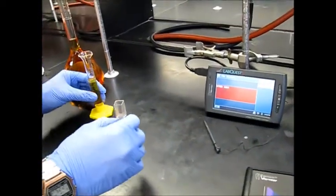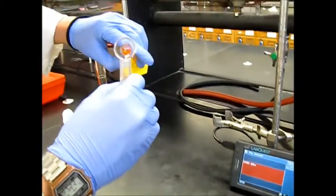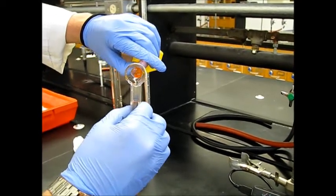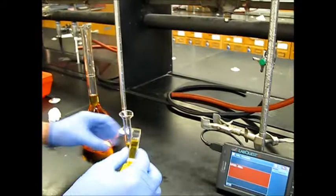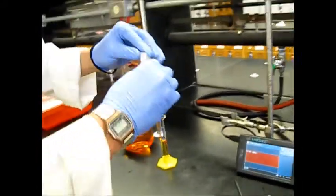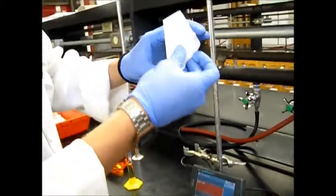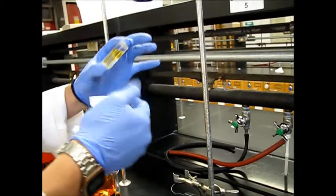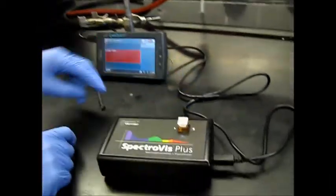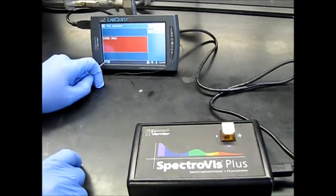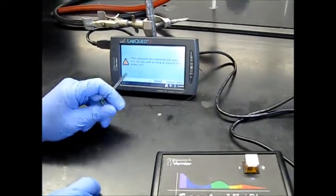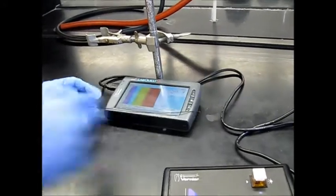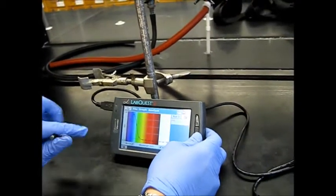So now that we have our blank set, we'll go ahead and fill this cuvette about three-fourths of the way full with our solution. Place our cap on, and then again, we want to use our chem wipe.